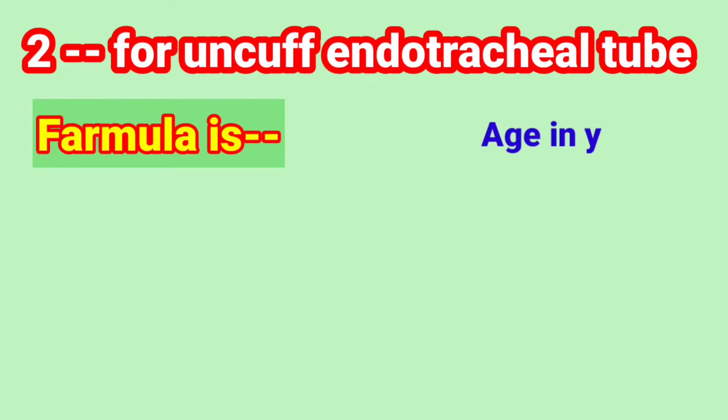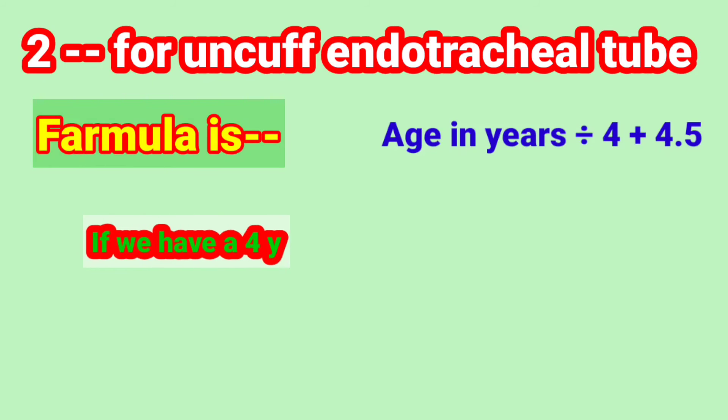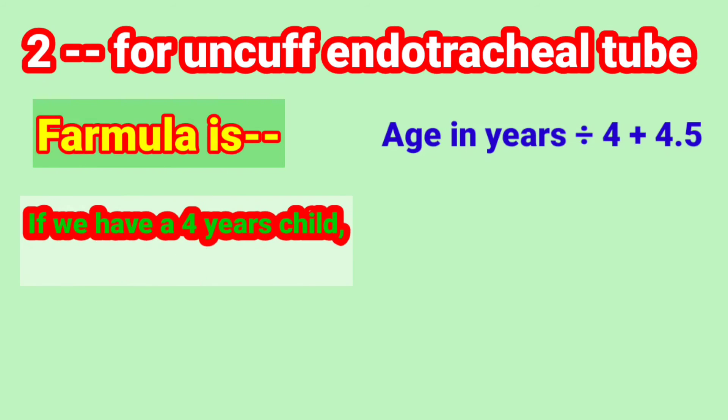The second formula is for uncuffed endotracheal tube. The formula is: age in years divided by 4, plus 4.5.